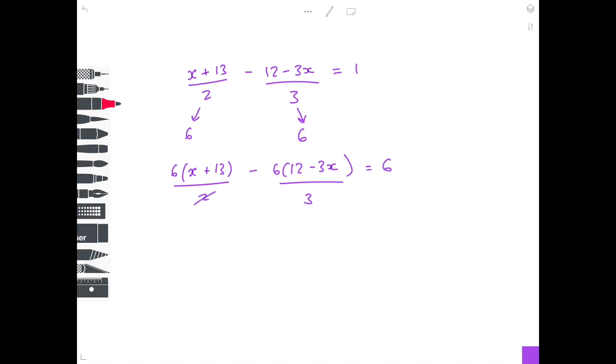Now multiply out your brackets. That becomes 3x. What's 13 times 3? That's 39. Minus 2 times 12 is minus 24. Minus 2 times minus 3x. Be careful, that becomes positive. So it becomes plus 6x equals 6.